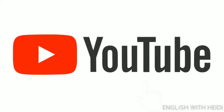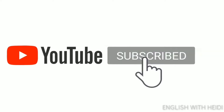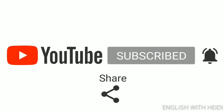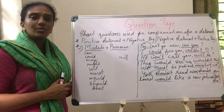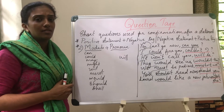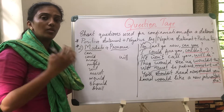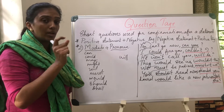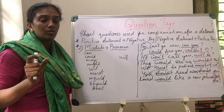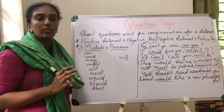Moving into our video — question tags with modals work the same as with the auxiliary verb. With auxiliary verbs, you pick out the auxiliary verb and then follow it with a pronoun. That's why with modals, the modal is always followed by a pronoun.